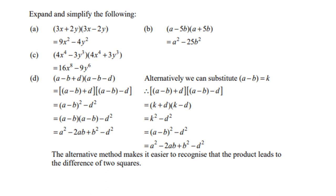Expand and simplify: (3x + 2y)(3x − 2y). The two brackets are very similar except one has a plus and the other a minus. So we write a negative in the middle, square the first term — 3x times 3x is 9x² — and square the second term — 2y times 2y is 4y² — because the two middle terms cancel. Answer: 9x² − 4y².